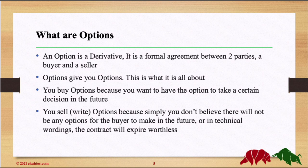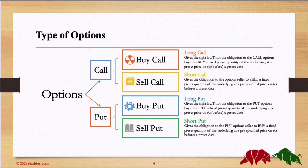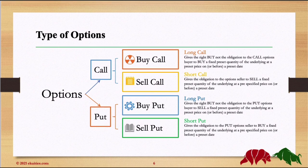So what are the types of Options? We have two types: a Call Option and a Put Option. You may buy or sell a Call Option, and you may buy or sell a Put Option. So we end up with four combinations: buy a call, sell a call, buy a put, and sell a put.